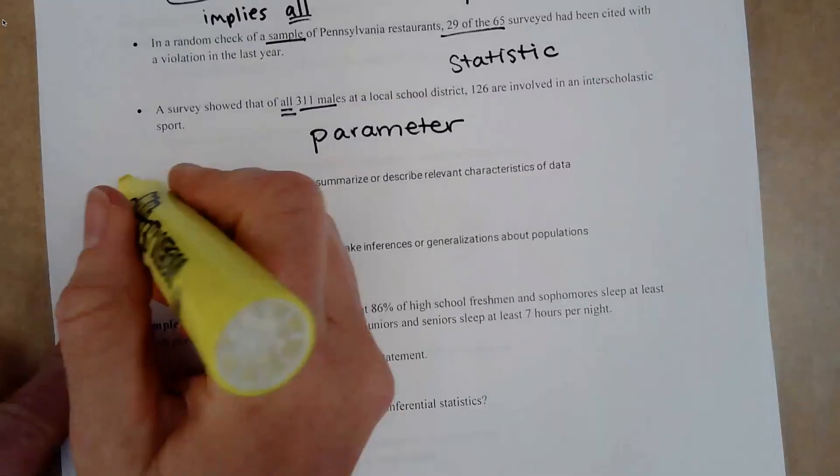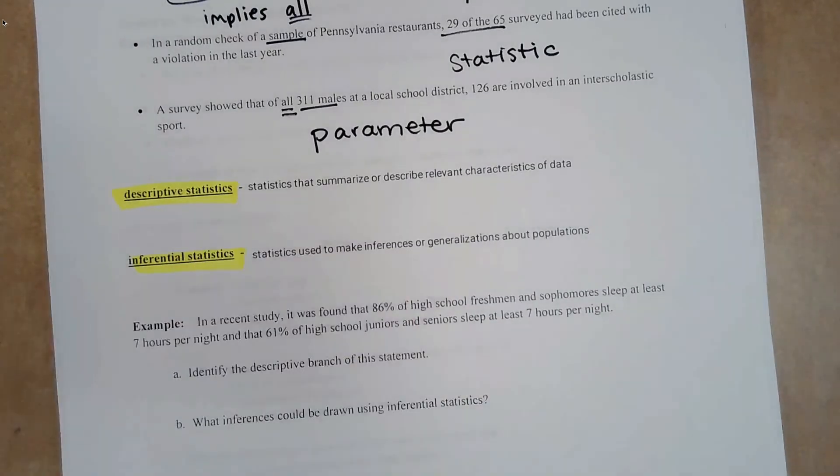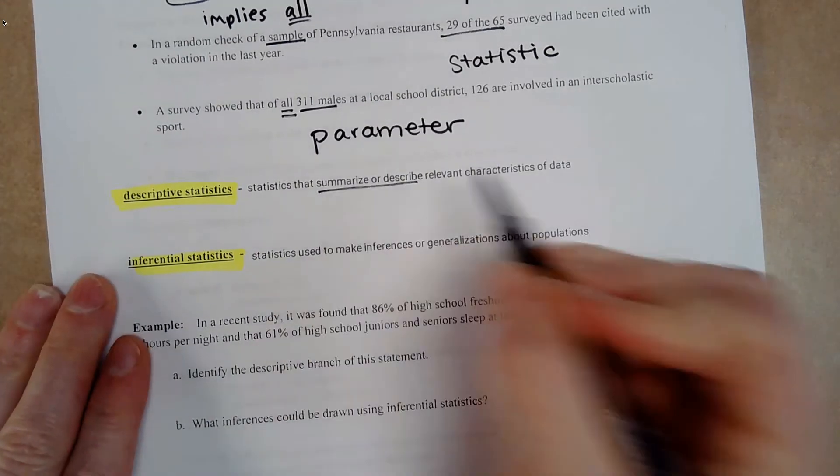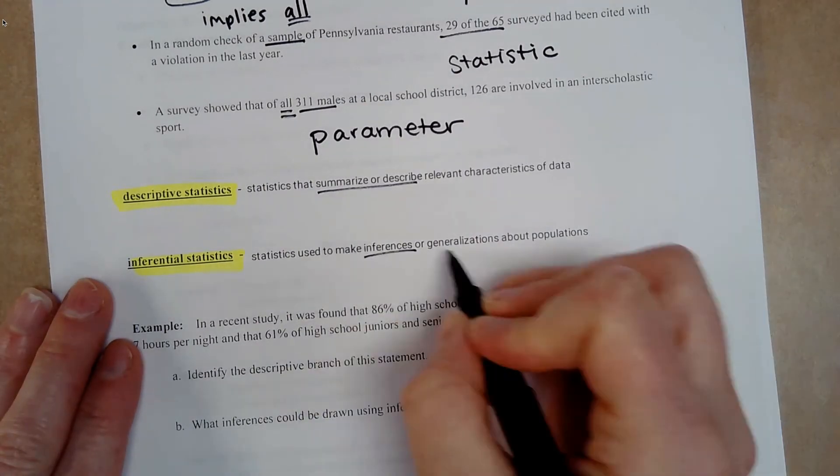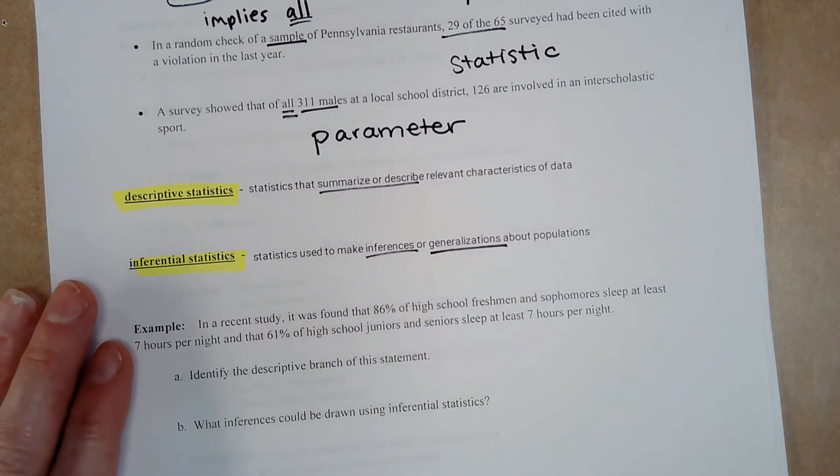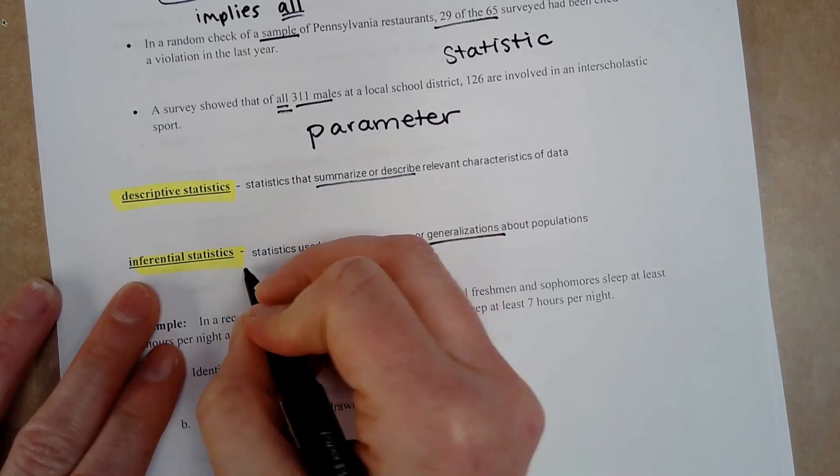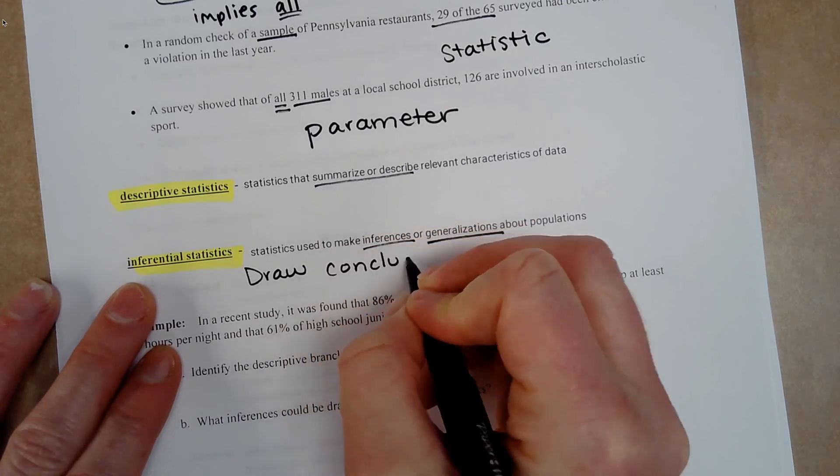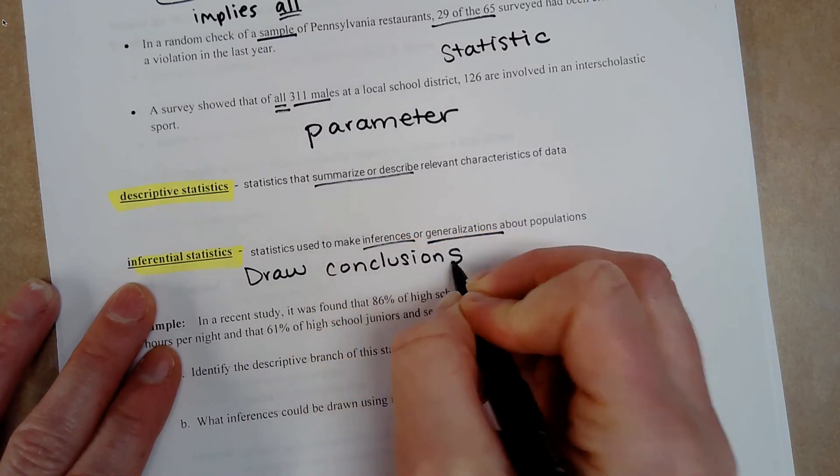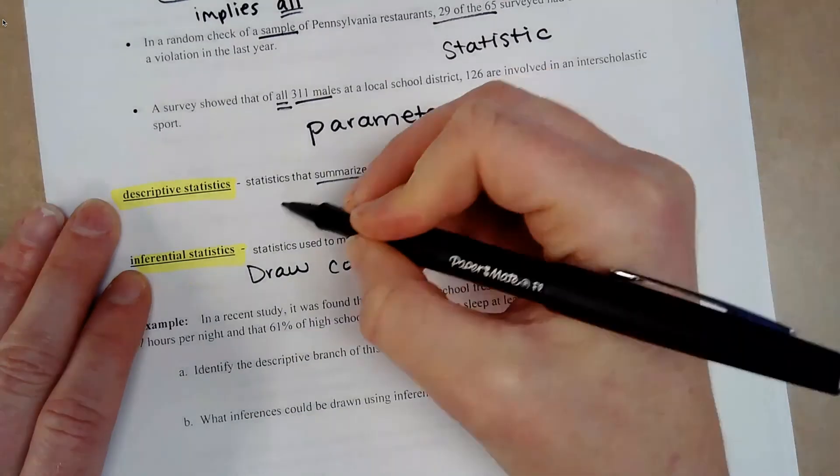Next one, descriptive statistics. Inferential statistics. So descriptive is just summarizing or describing the data. Inferential is you're making inferences, generalizations about the population. So inferential, you're going to actually draw a conclusion or draw conclusions.